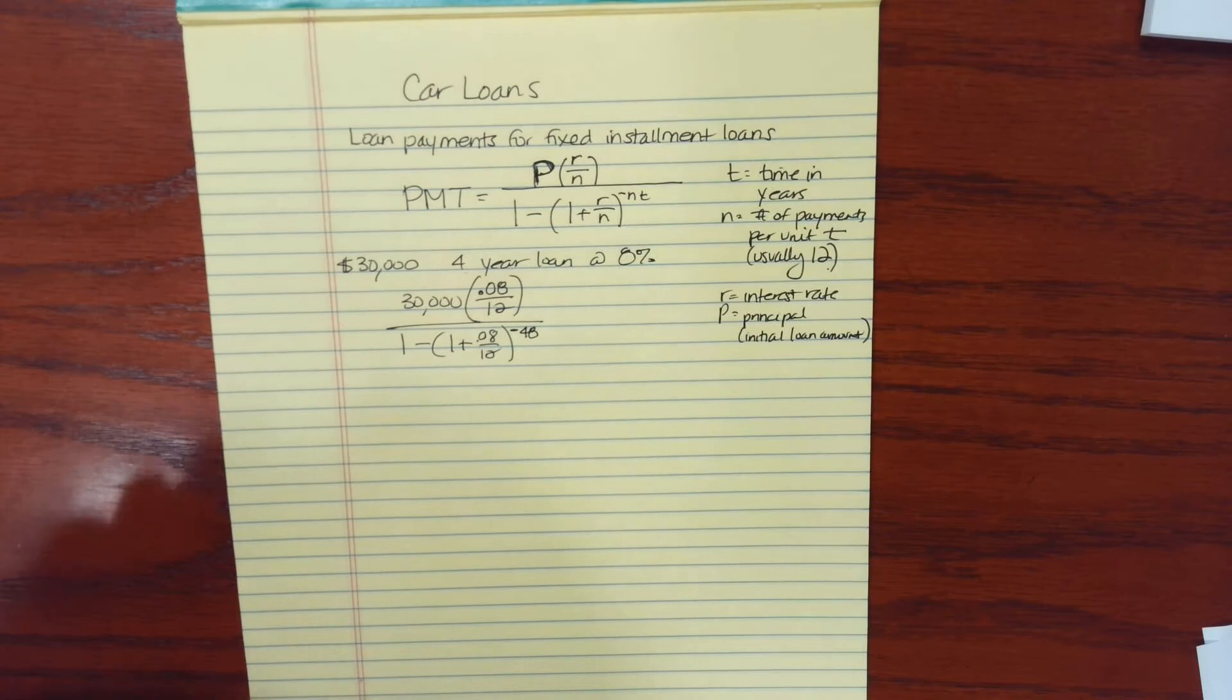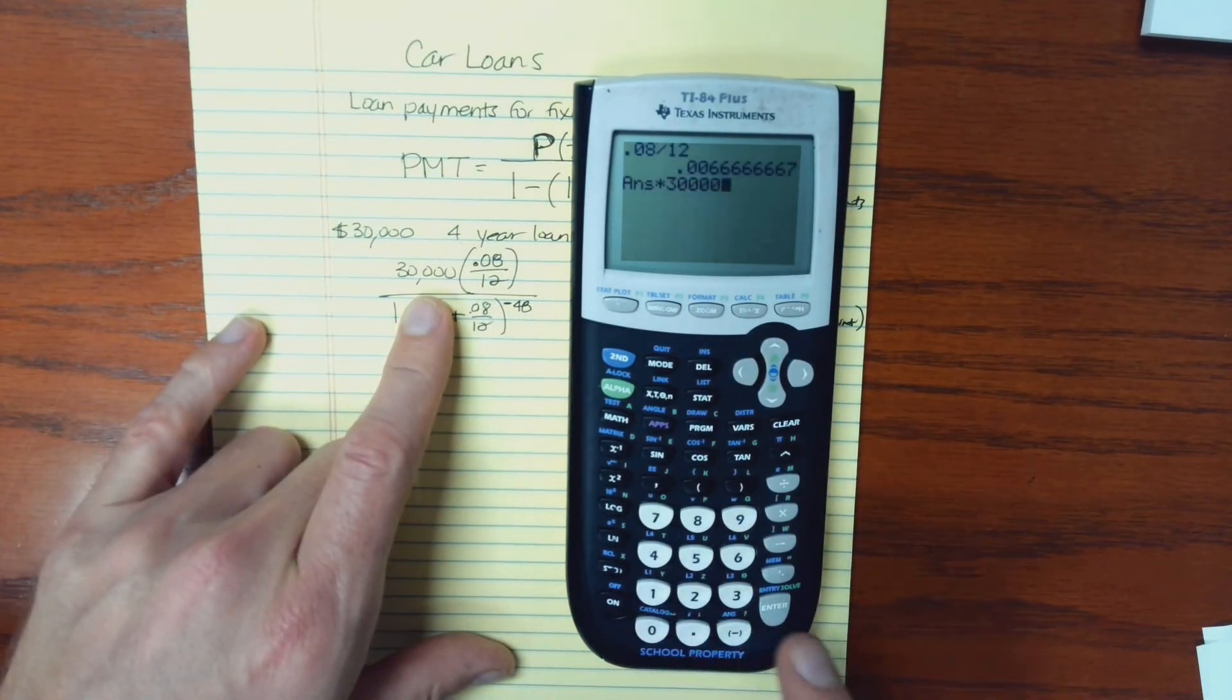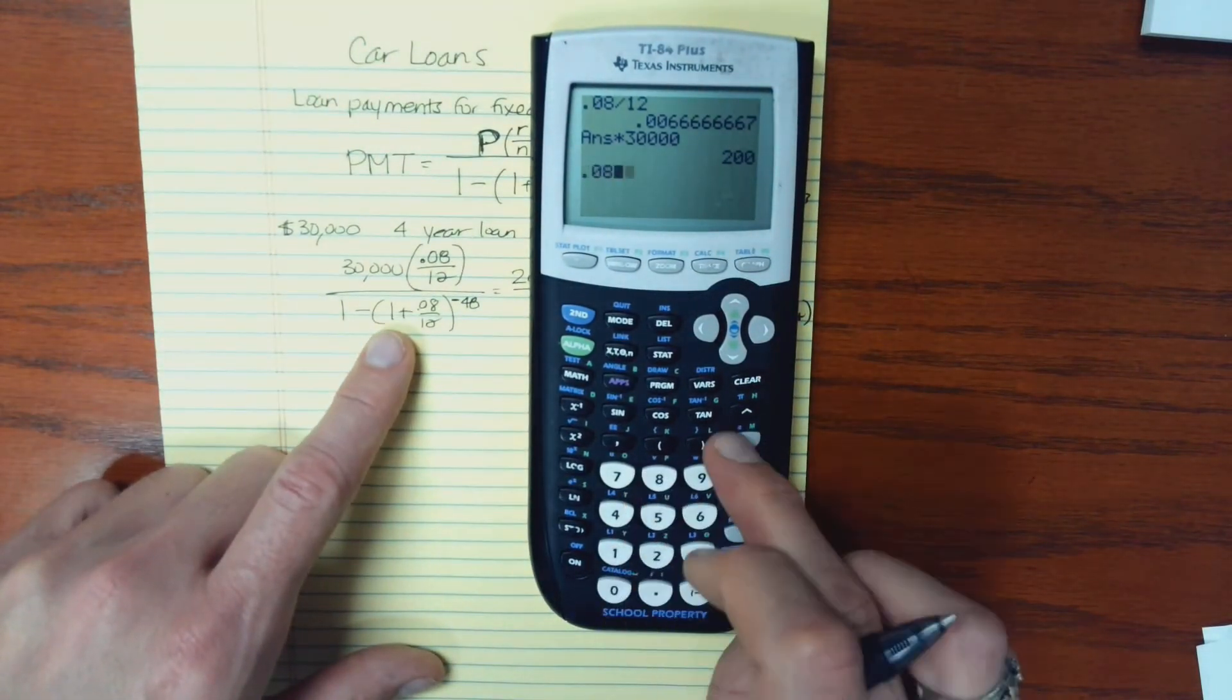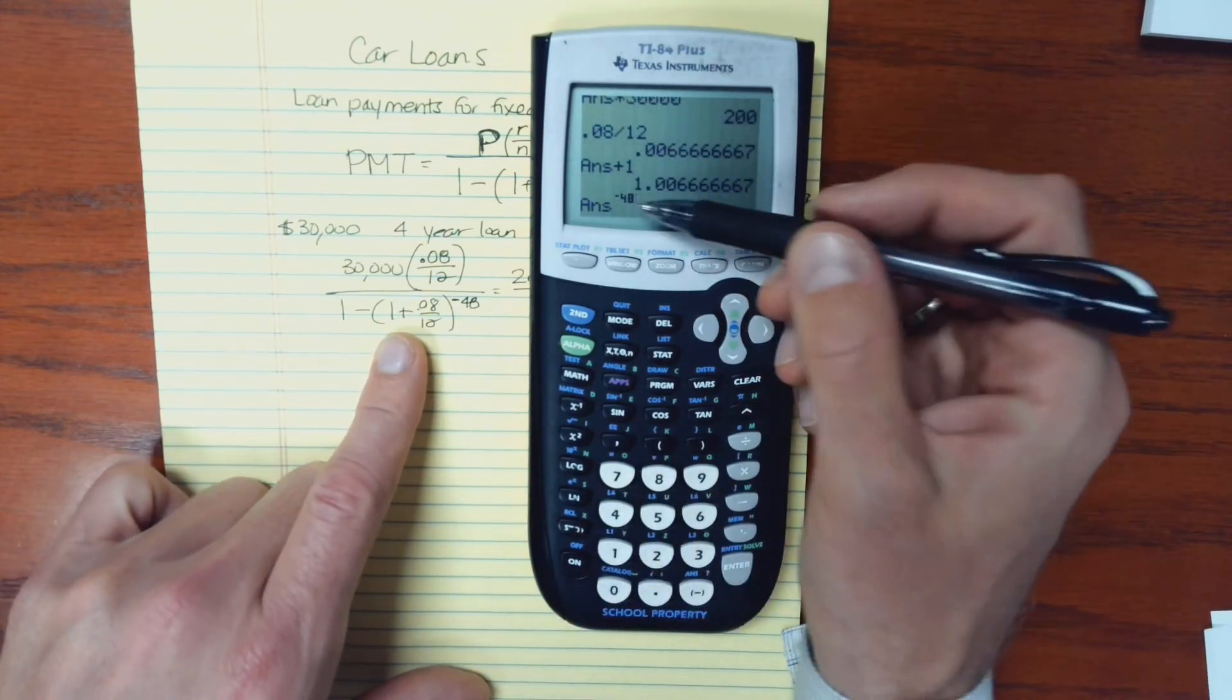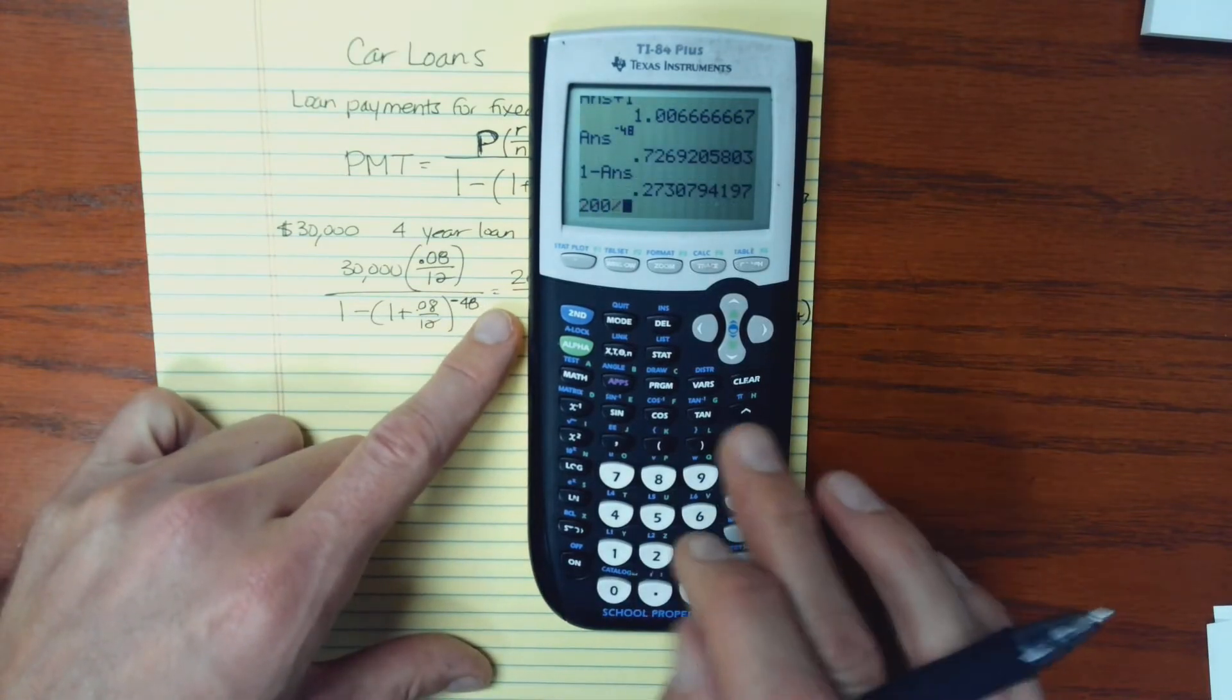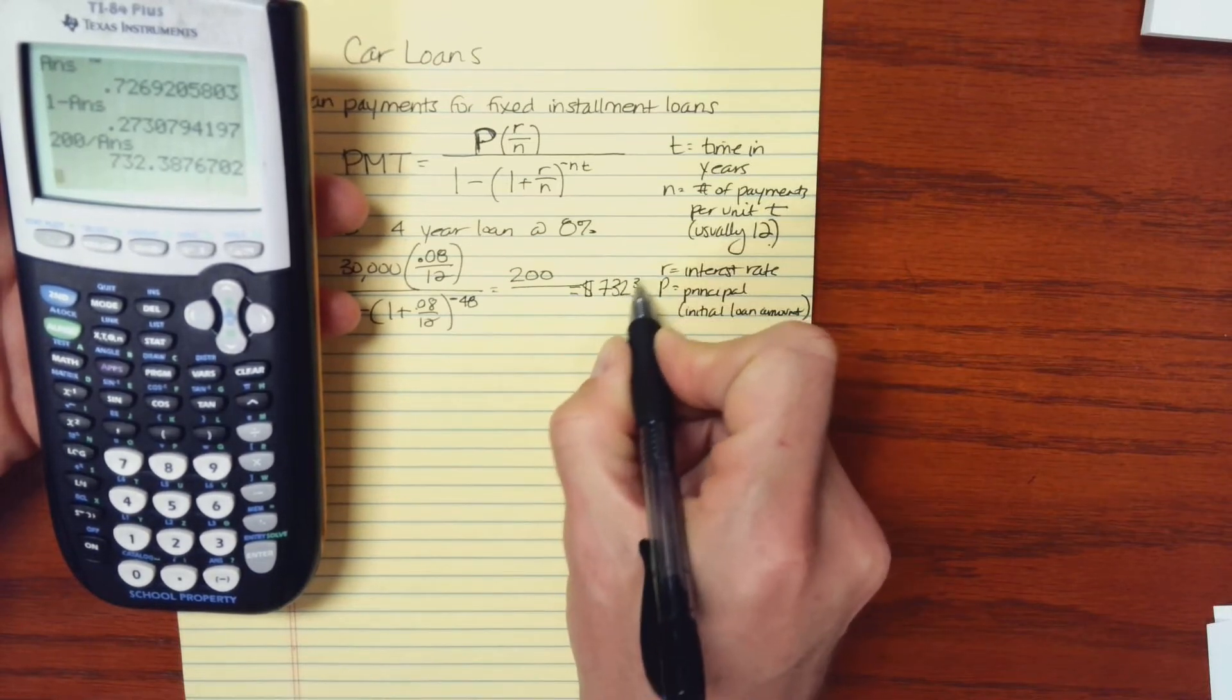So let's do the calculation. Okay, so here's my calculator. I'm going to take 0.08 and divide that by 12 and multiply that by 30,000. So I like to do this in pieces. So the first step is to get the numerator there. It's 200. And then in the denominator, I have 0.08 divided by 12 plus 1. And that's all raised to a power of negative 48. Don't forget that negative. It's really important. You'll get crazy answers if you leave that off. And then it's 1 minus that result. And so I need to take 200 and divide it by that answer.